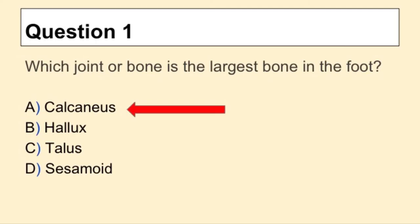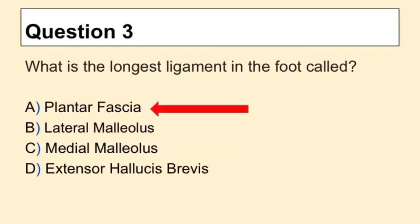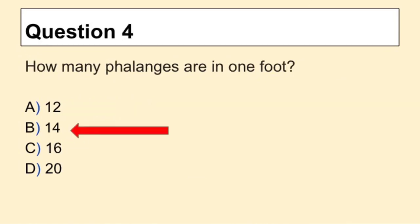Question 1: Which joint or bone is the largest bone in the foot? The answer is A, calcaneus. Question 2: Which of these is not a muscle in the foot? The answer is C, gastrocnemius. Question 3: What is the longest ligament in the foot called? The answer is A, plantar fascia. Question 4: How many phalanges are in the foot? The answer is B, 14.